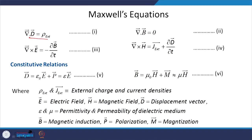Here are Maxwell's four equations: del dot D equals rho_external, del dot B equals 0, del cross E equals minus del B by del t, and del cross H equals J_external plus del D by del t. These four relations rely on two constitutive relations: D equals epsilon_0 E plus P, which you can write as epsilon E, and B equals mu H.